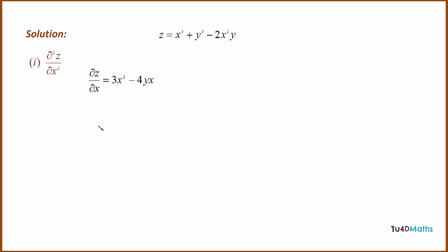Now we want to differentiate this again, keeping y constant and differentiating with respect to x. Differentiating 3x squared we get 6x. Differentiating minus 4yx, we group the 4 and the y together as a constant, so this just gives minus 4y.